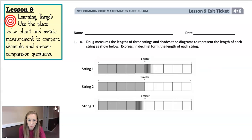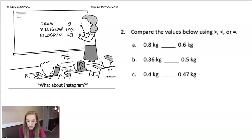But let's look at the next one to help us compare. So it says compare the values below using greater than, less than, or equal to. Grams, milligrams, kilograms. This is what you guys are all working on right now, I'm sure. So if they have the same place value as the last number, it's really easy to compare. This is .8, .6, it's easy to see that .8 would be bigger.